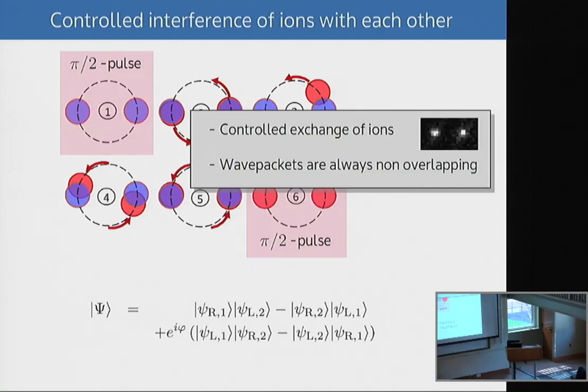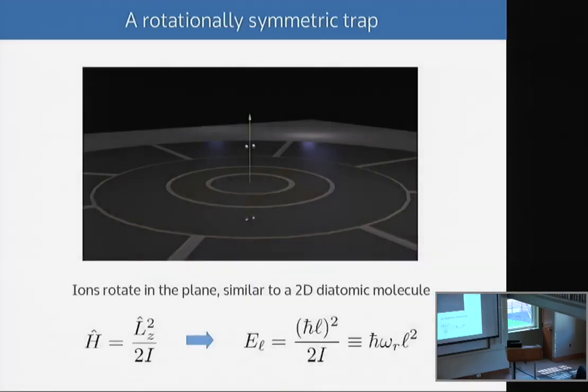What makes this experiment maybe different from other observations of quantum statistics, often people look at it spectroscopically. This is a controlled exchange of the ions. Also the wave packets are always non-overlapping. The ions are far away from each other and I have no chance of, if I have an ion here, there is no significant probability to find one ion at the position of the other ion. They are macroscopically separated, and that removes effects of what is called exchange interactions which are typically always present.